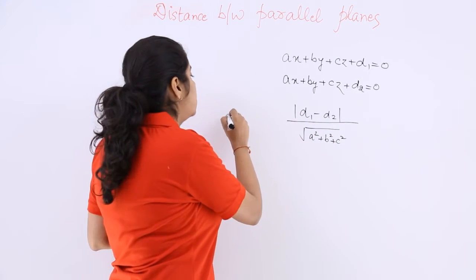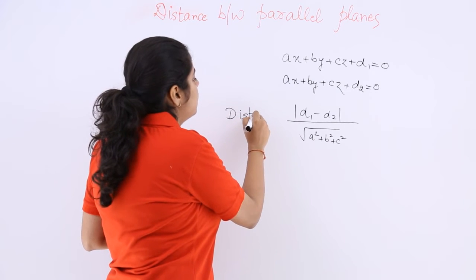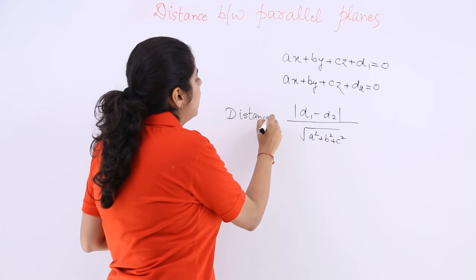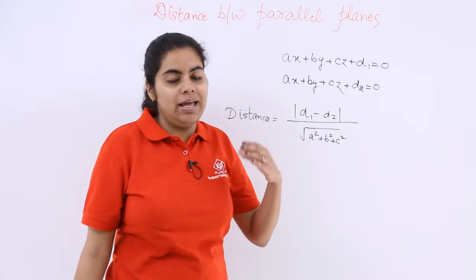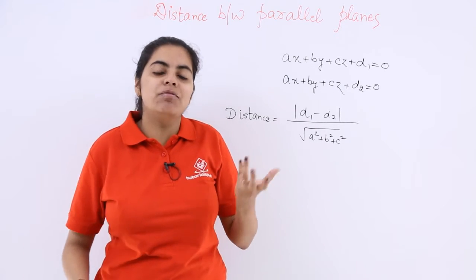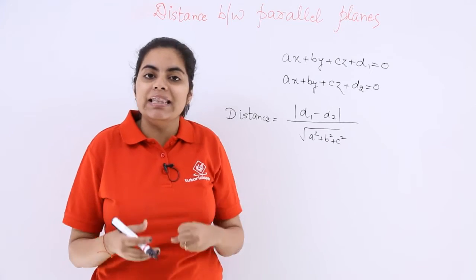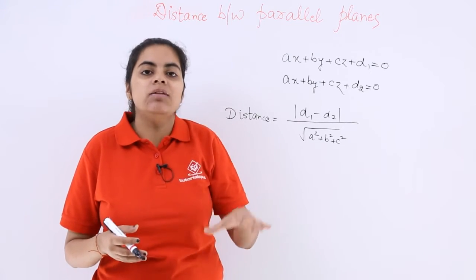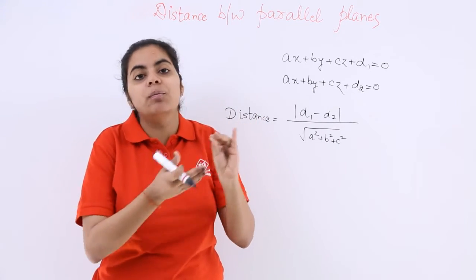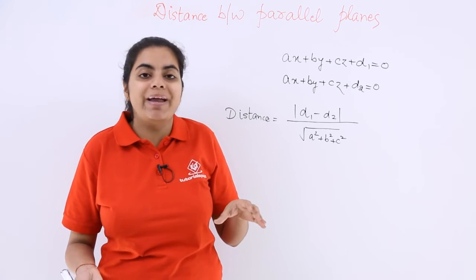So this is regarding the distance. So what are we going to do? We are going to assume any point on any one of the planes, say x1, y1, z1 be a point on any of the planes and then we will go and see the distance of that point from the other plane which is perpendicular distance.